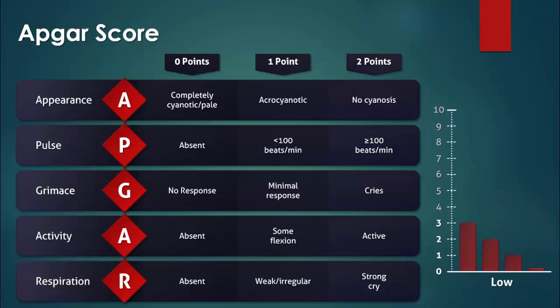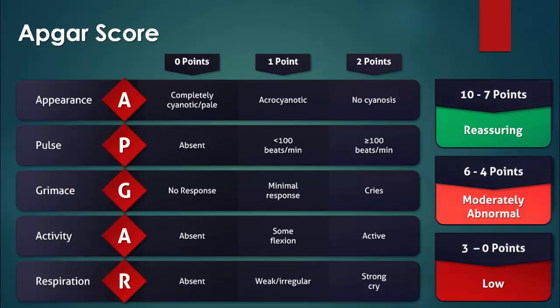A score of 3 or less is considered to be low. These babies need full resuscitation. The score is used to assess the status of the newborn and the successfulness of resuscitation. The comparison of sequential examinations will help determine if the baby's condition has remained the same, improved, or deteriorated.